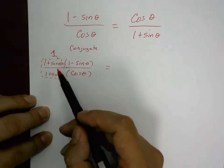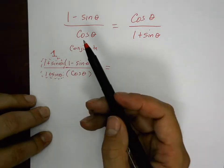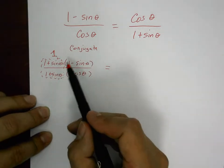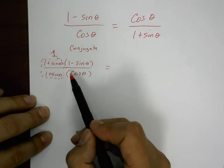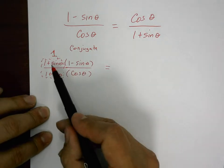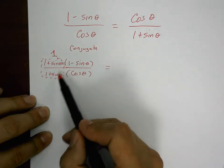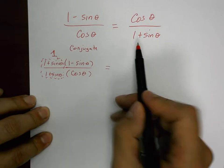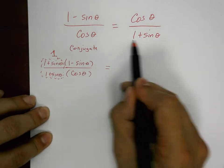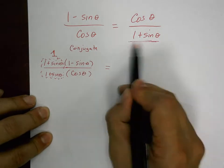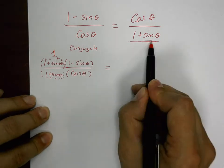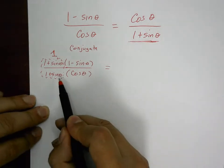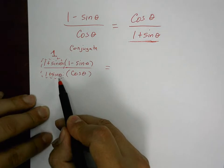You might ask, how would I know to do that? Because you can see that there's a one plus sine of theta in the finished product, and now we have one there. But multiplying by the conjugate seems to take the numerator far away from what you want — it doesn't look remotely close to cosine yet.